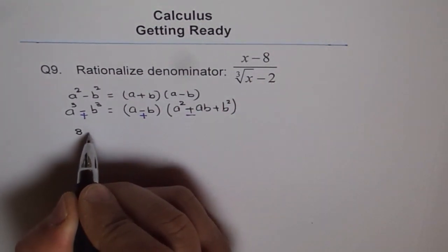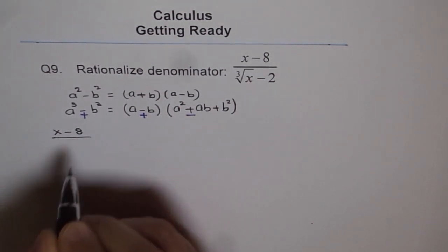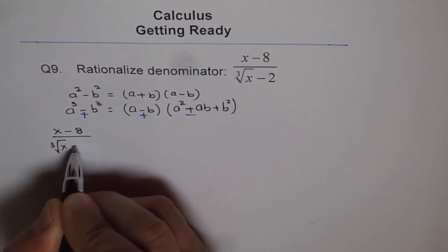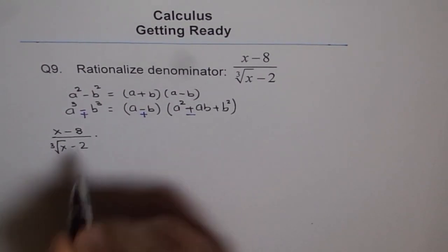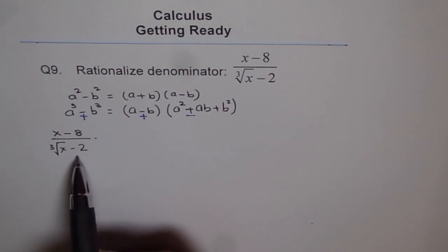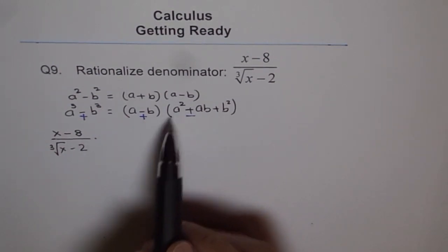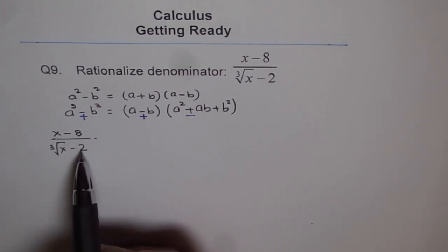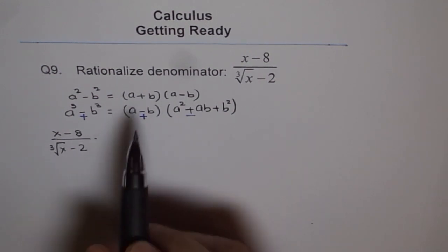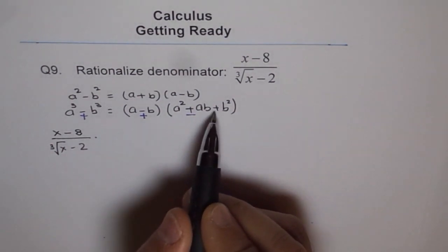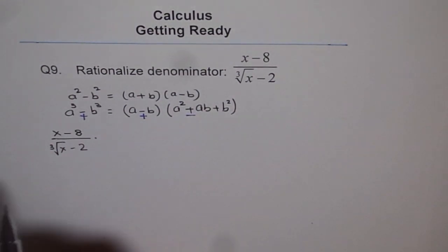The given function is x minus 8 over cube root of x minus 2. To rationalize it, we should multiply, not with cube root x plus 2. That is a huge mistake, which some students will do. We need to multiply this with, think this is a for you, and this is b for you. Think this is like a minus b. So, we need to write here a square plus ab plus b square to rationalize this.